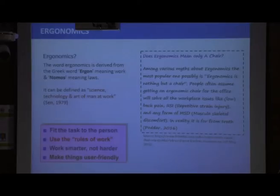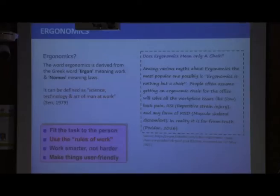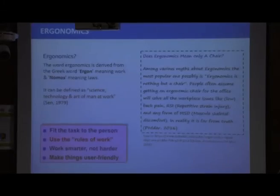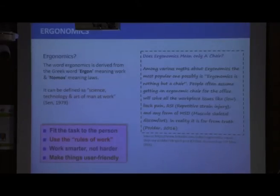Ergonomics deals with so many factors beyond just a comfortable chair. For example, in office ergonomics alone, it is related to the hierarchical structure of the office, the physical environment where the person works, cognitive workload — how much information is being received, how much physical or mental activity is required. So many other aspects are associated, yet people's understanding is limited to comfortable sitting posture or chair and table design.